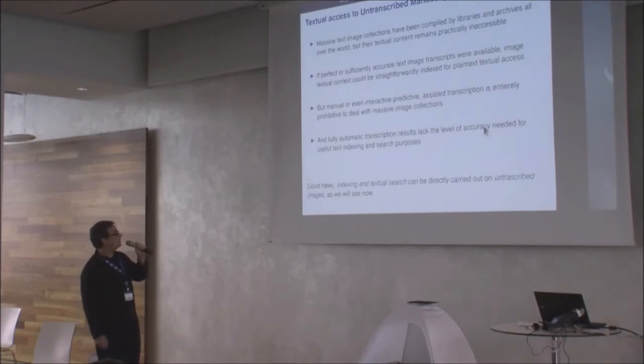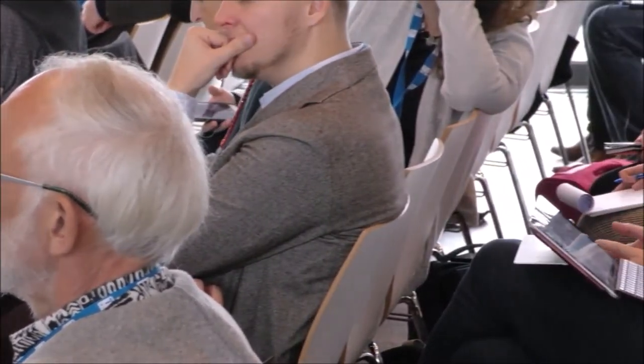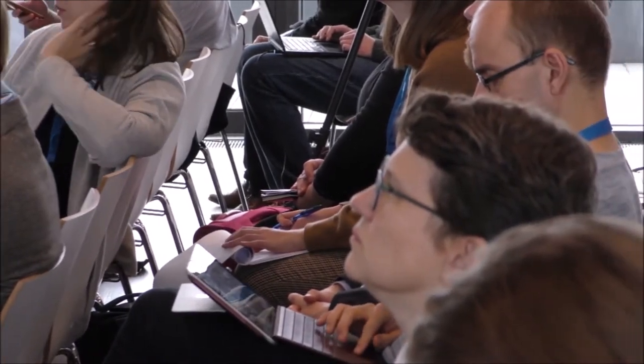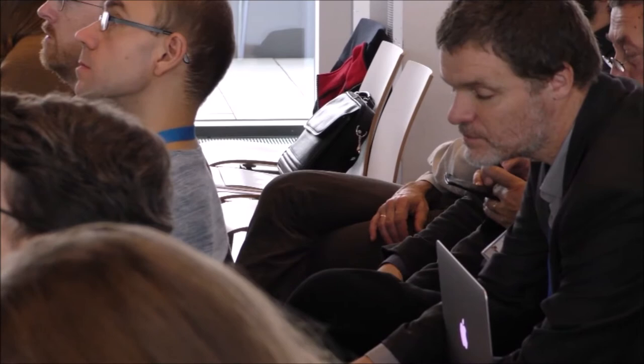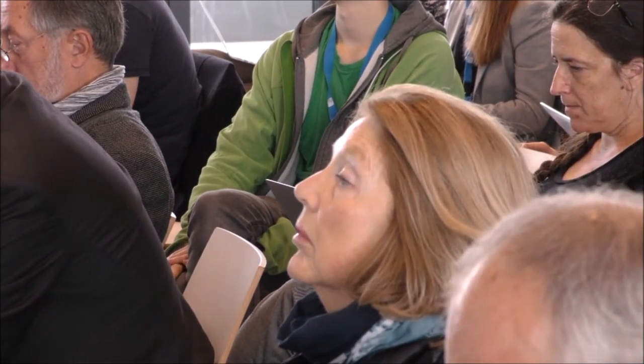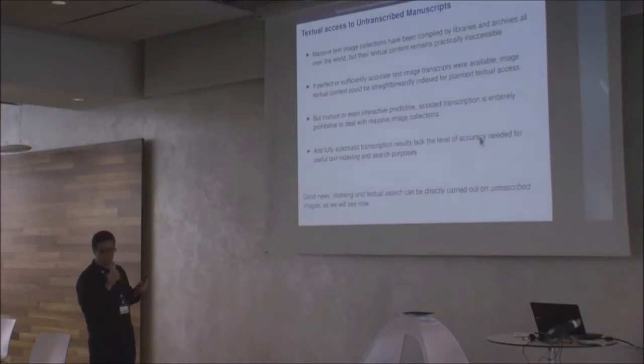Everybody knows there are massive text image collections available from cultural institutions around the world, and most of these documents remain untranscribed, making them impossible to search. The idea here is that if we had accurate image transcripts for such documents, we could use transcripts to build an index and make the collection searchable. Of course, manual or interactive transcription of such material is an expensive and difficult task, requiring domain experts. And automatic transcription systems are not error-free, so they are not directly useful for search purposes.